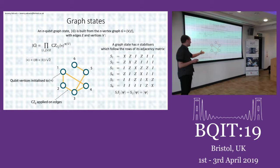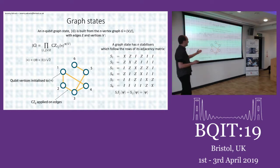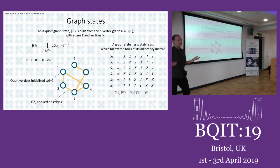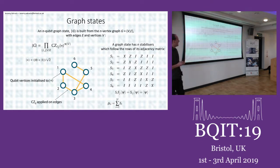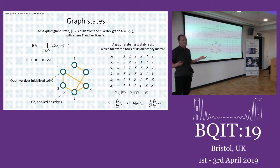Stabilizers are defined as an operation on a state which leaves the state untouched. By multiplying stabilizers you can generate more stabilizers, and from n generators you can generate a set of 2^n stabilizers. It turns out you can decompose any stabilizer state into its stabilizers, and we're going to use this to measure the fidelity.